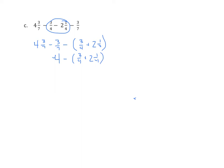So we have four and three-sevenths minus three-sevenths is four, minus the sum of three-fourths and two and one-fourth. Well, I know that three-fourths plus two and one-fourth is three. So four minus three is one. On to another.